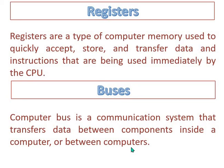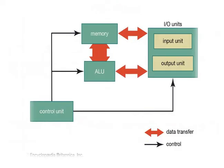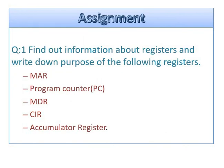Computers also use buses. A computer bus is a communication system that transfers data between components inside a computer or between computers. The control unit uses the control bus to send control signals to all components. Data transfer between the ALU, output unit, input unit, and memory is done via the data bus. The address bus is used to send memory addresses to fetch instructions from memory.